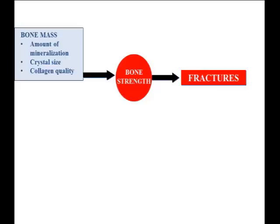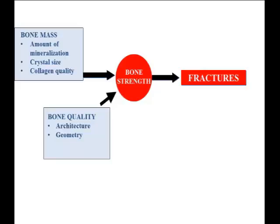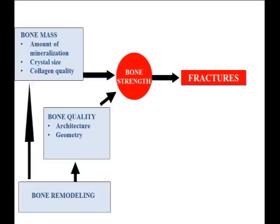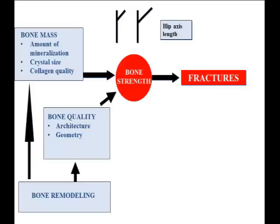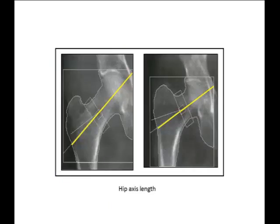Fractures are the result of diminished bone strength, which reflects bone mass, the amount of crystallization, crystal size, and the quality of the bone itself. Bone quality is affected by bone architecture and geometry. The hip axis length and femur-neck angle may also affect the likelihood of bone sustaining a fracture — if this hip axis length appears longer, or the femur and neck angle is different, this may affect fracture risk.